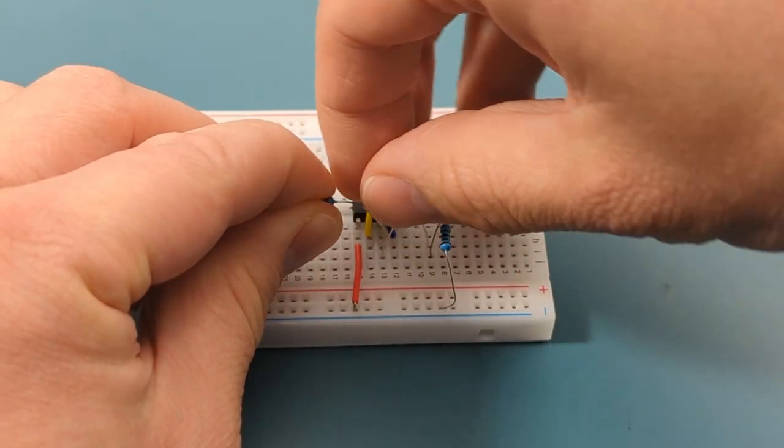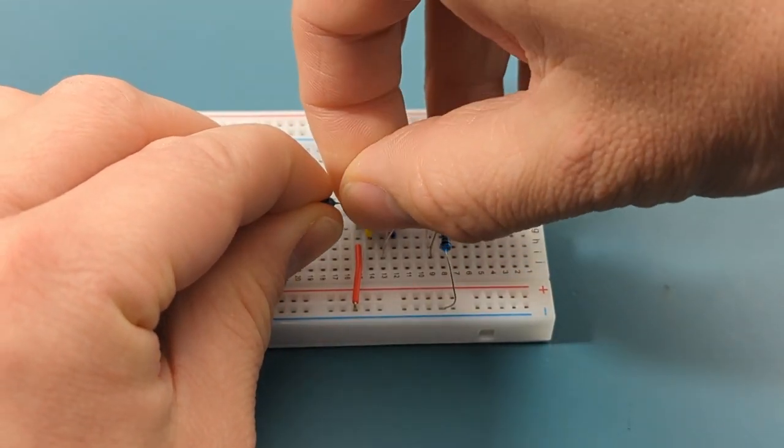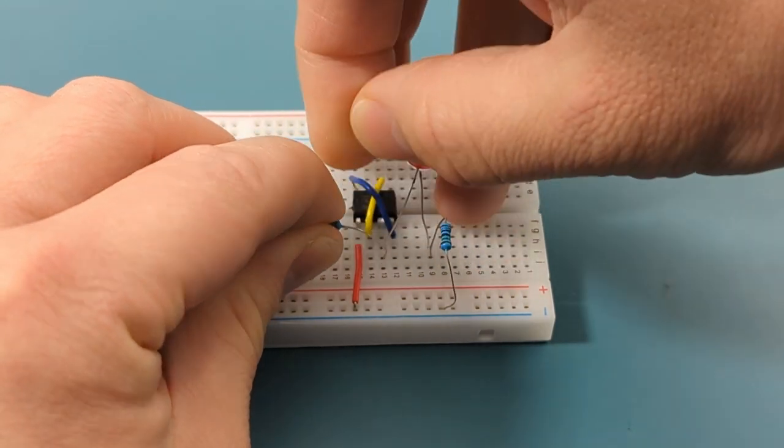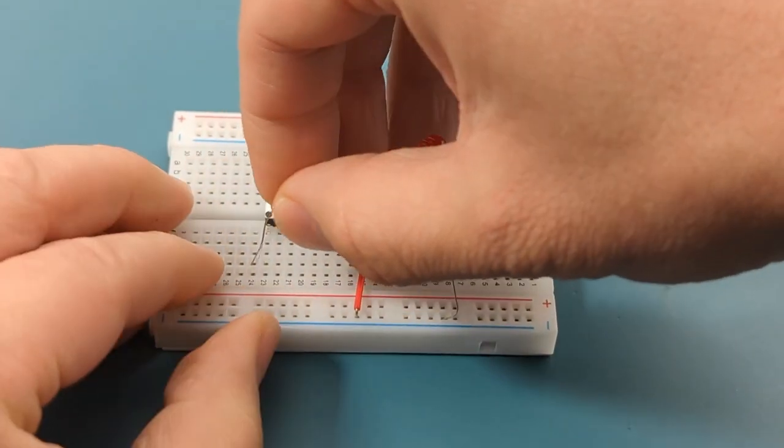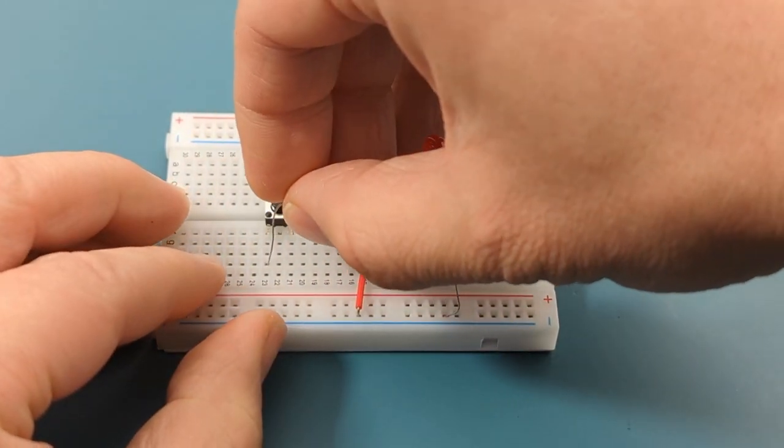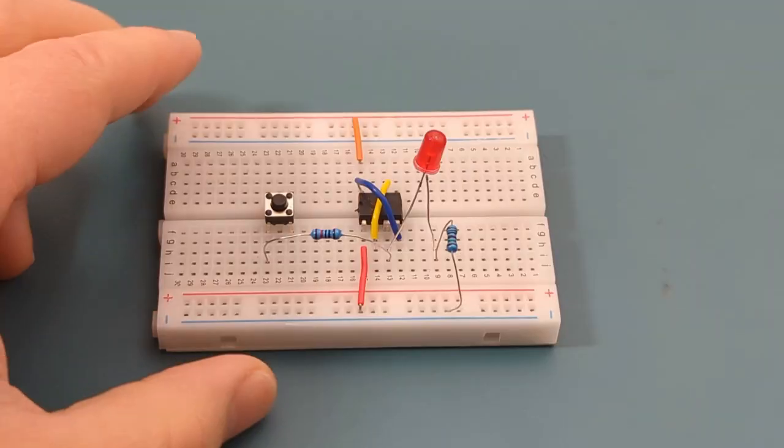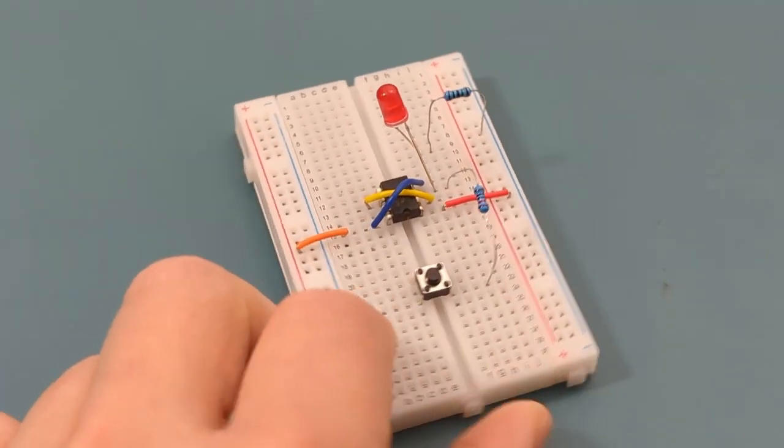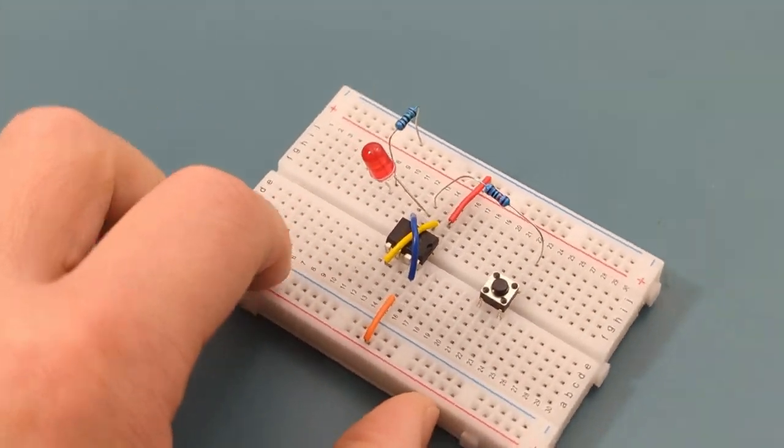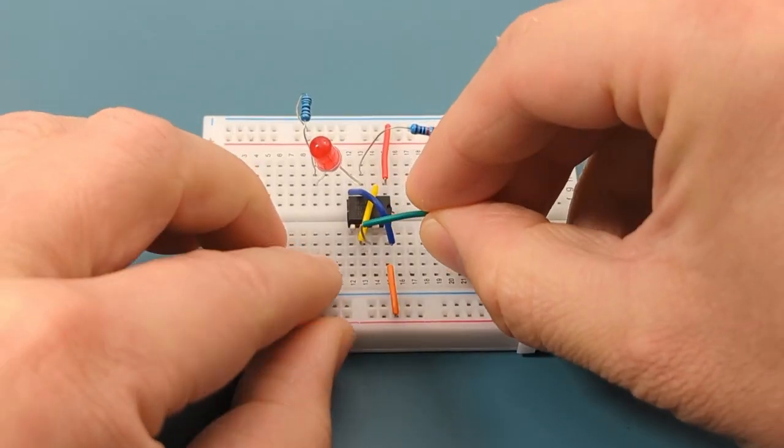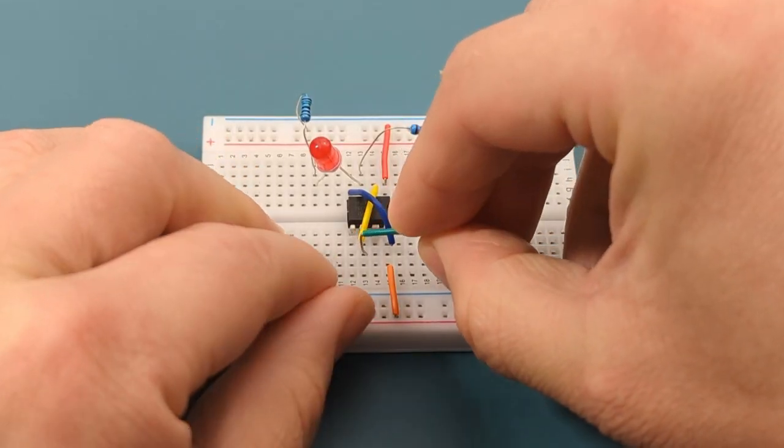Insert a 10,000 ohms resistor between pin three and one side of the push button switch. Rotate the breadboard to the other side. Insert a jumper wire from pin six to the other side of the push button switch.